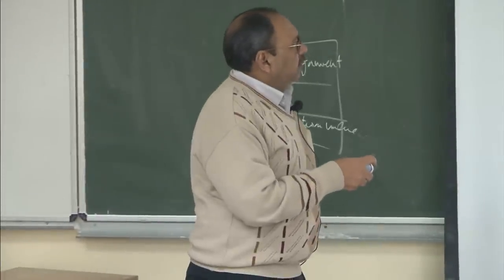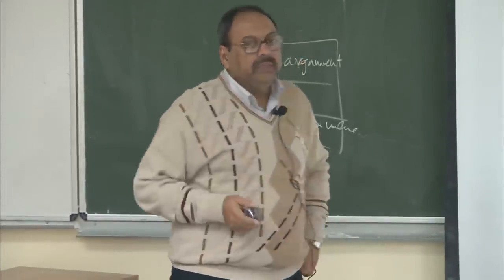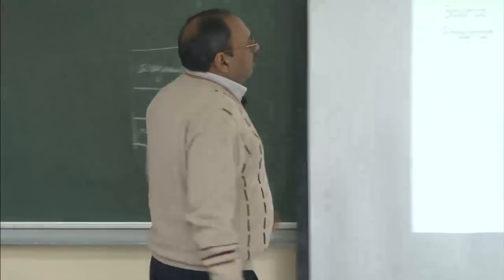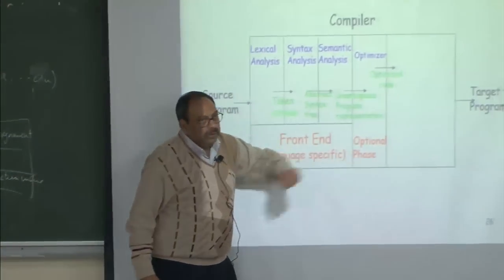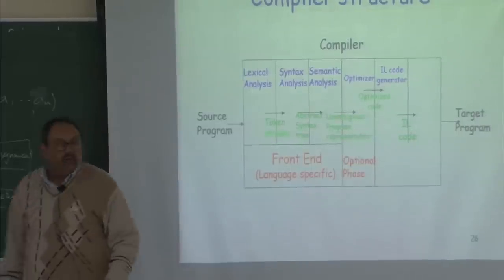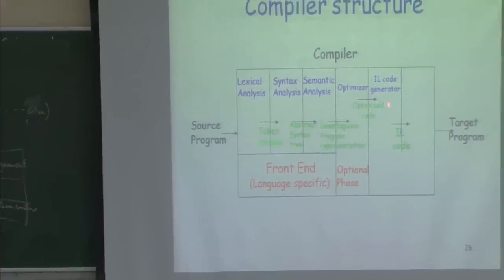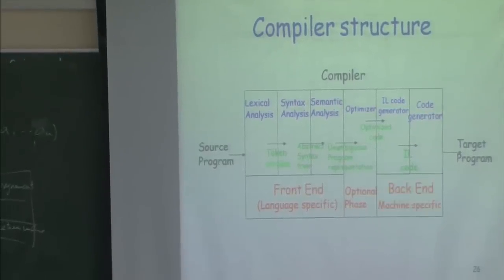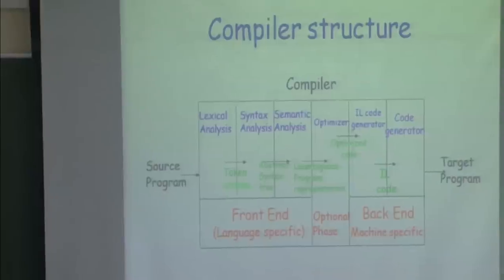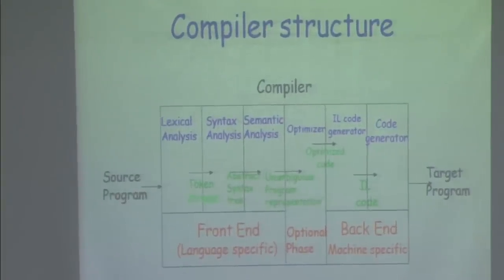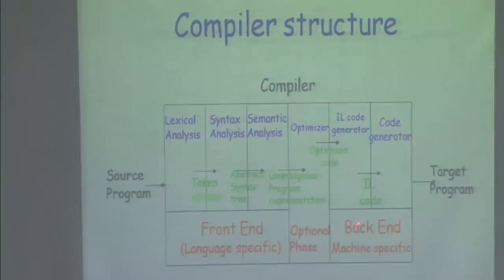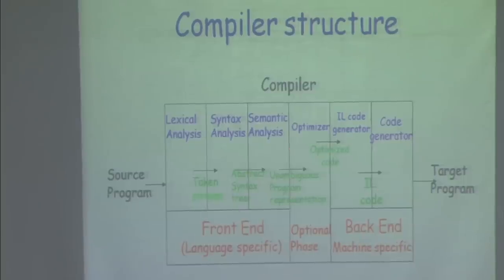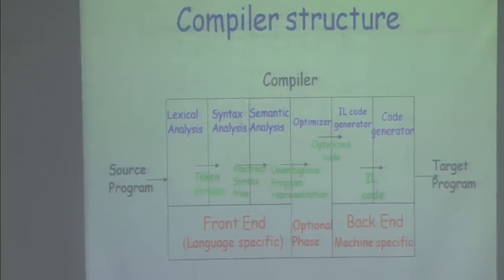So how does my compiler look now? This is where we left our compiler with the front end, and we left the block empty. If I now try to fill it in, we will have an optimizer which is an optional phase. Then we will have two phases of code generation: intermediate language code generation and then the code generation itself. This is also historically known as the back end phase, which is specific to the machine — this is where machine-specific information starts coming into the compiler. This really completes the overall structure of the compiler.